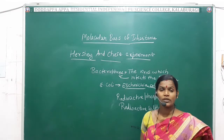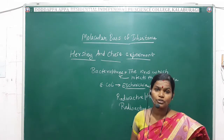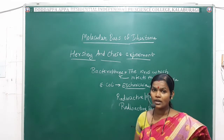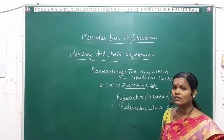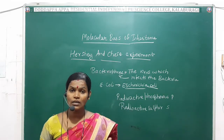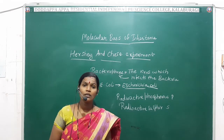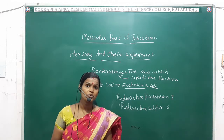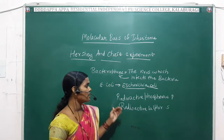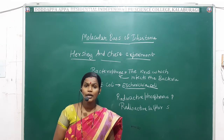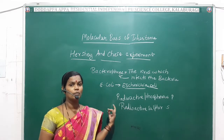The materials used by Hershey and Chase were: bacteriophage — the virus which infects bacteria; E. coli (Escherichia coli) — a bacteria commonly used in biotechnological techniques, culturing, testing, and synthesis of medicinal products in pharmaceutical industries, due to the presence of plasmids; and radioactive phosphorus and radioactive sulfur.